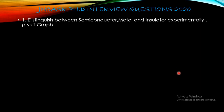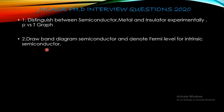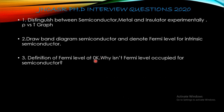Now going to the questions asked at JNCSR. The very first question to one of my fellow friends was to distinguish between a semiconductor, metal, and insulator experimentally. The answer is by measuring resistivity ρ as a function of temperature. Then they asked to draw the band diagram of a semiconductor and denote the Fermi level of an intrinsic semiconductor — you know the Fermi level is at the middle between the valence band maximum and conduction band minimum.